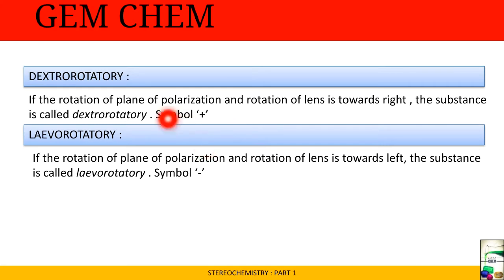Dextrorotatory means if the rotation of plane of polarization and rotation of lens is towards the right, the substance is called dextrorotatory with symbol plus. Levorotatory means if the rotation of plane of polarization and lens is towards left, the substance is called levorotatory with symbol minus.